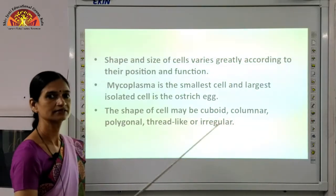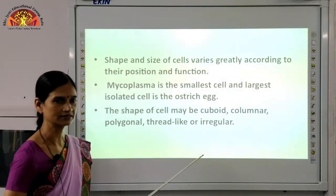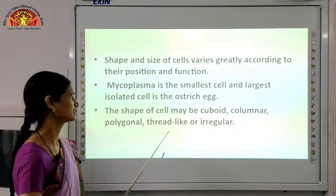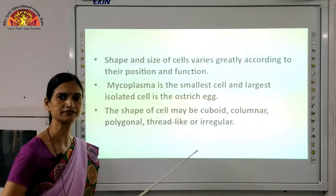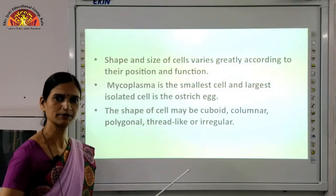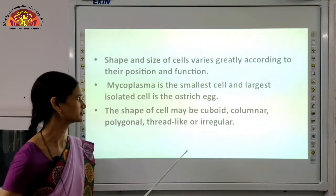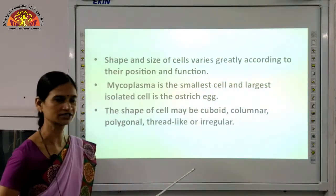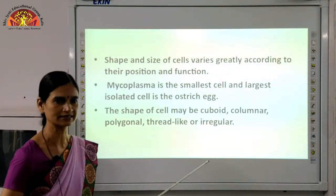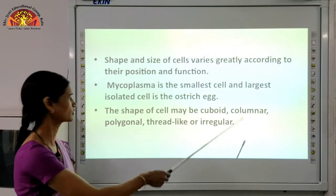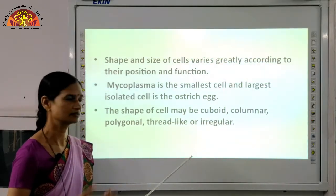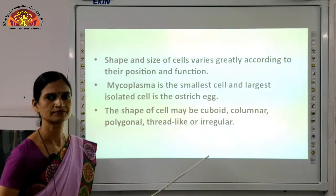The shape of the cell may be cuboid, columnar, polygonal, thread-like, or irregular. Nerve cells have an elongated structure. WBC has no particular shape. RBC is oval-shaped and biconcave. Epithelial cells may be cuboid, columnar, or polygonal — so there is a variety of shapes.